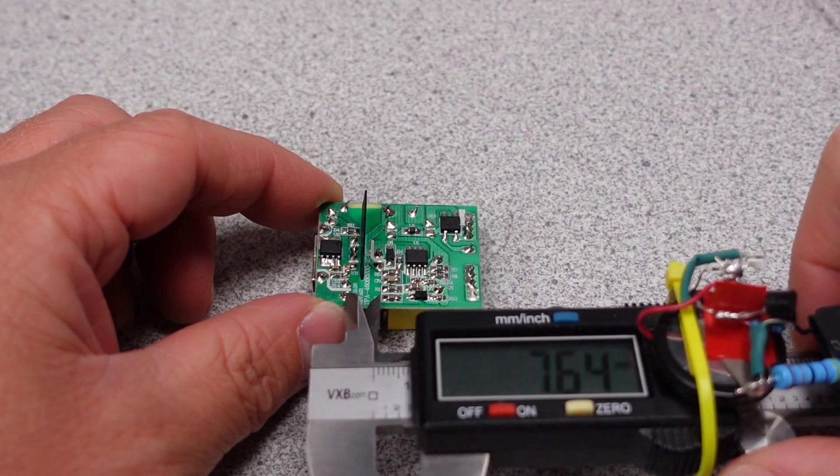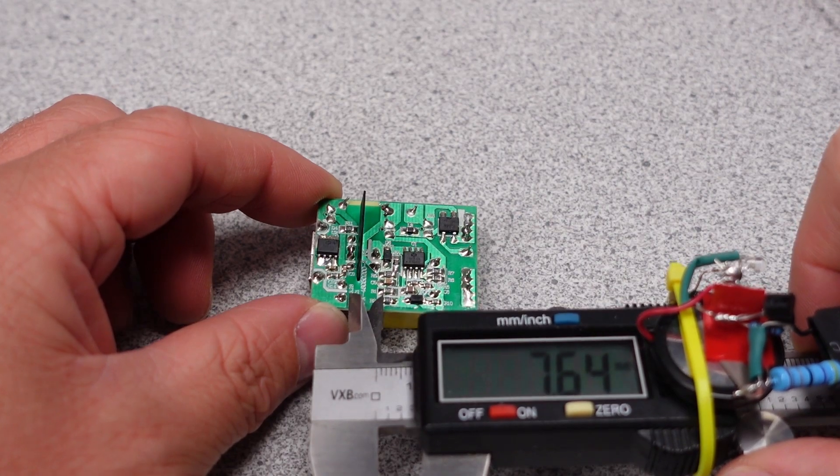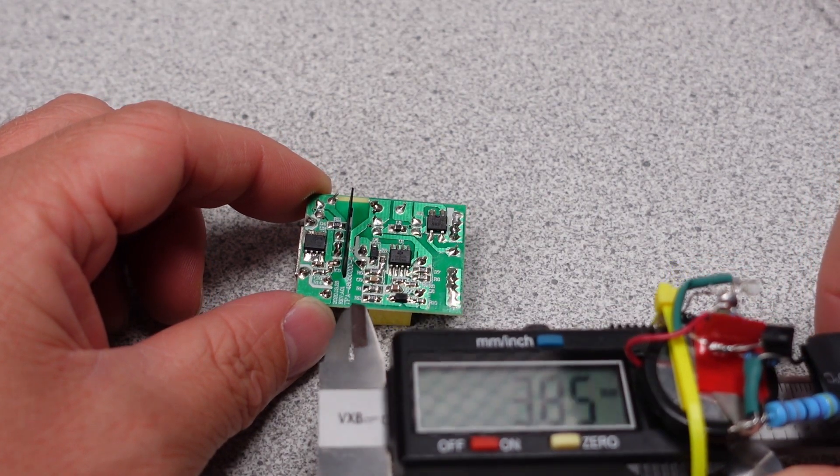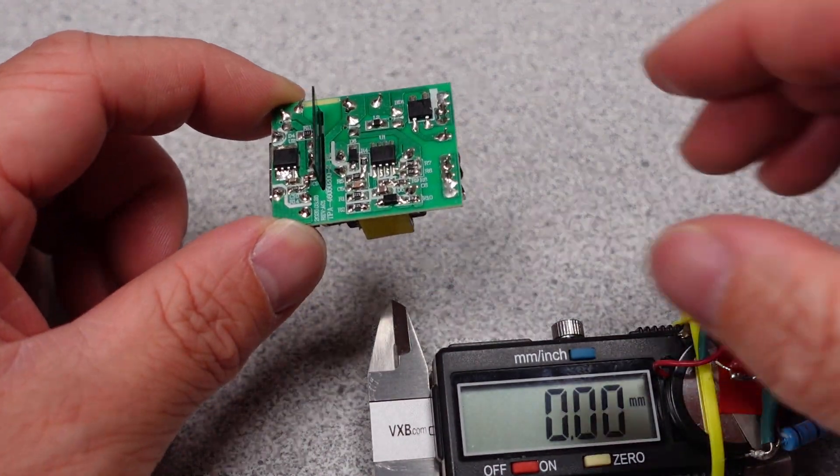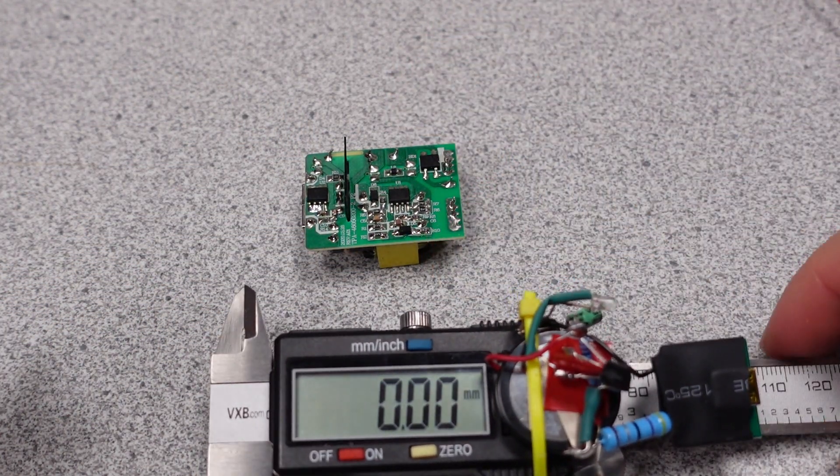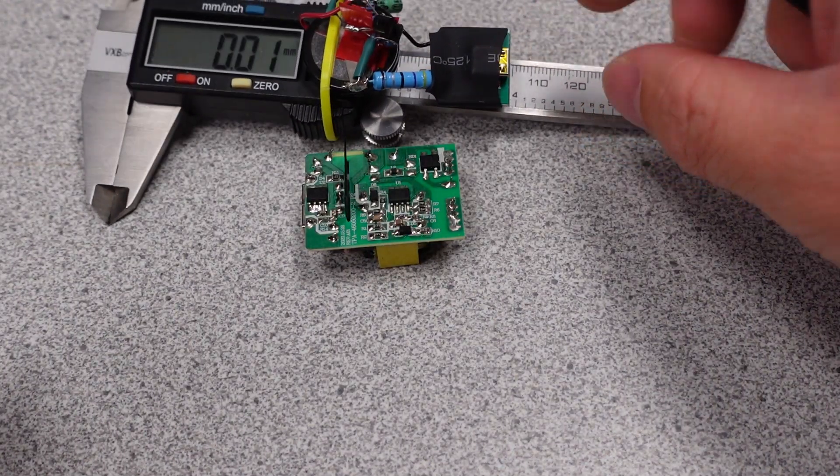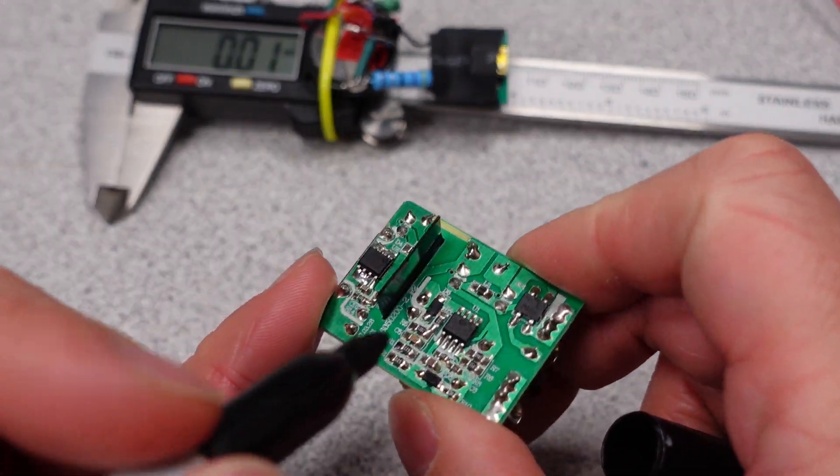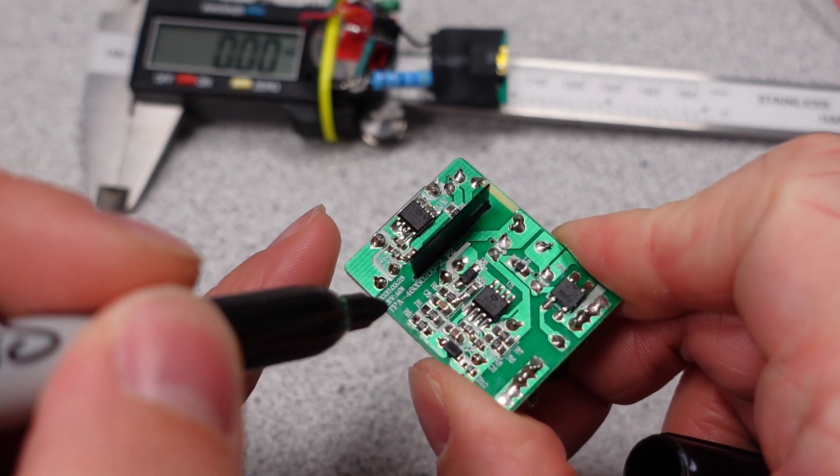Electricity can travel through air at high enough voltages. The space, mostly in air between components, is called clearance. This doesn't have to be on the printed circuit board or PCB. Physical barriers or separators can increase this distance. In general, the larger the clearance between components, the safer the device.